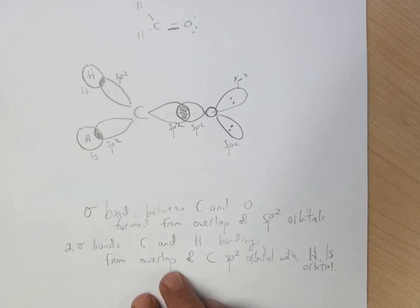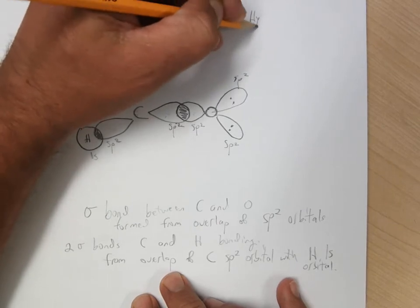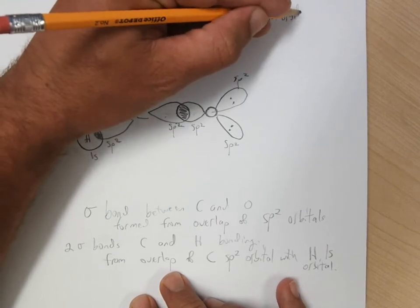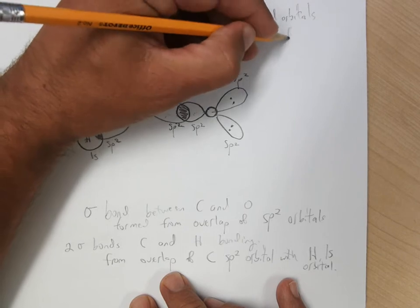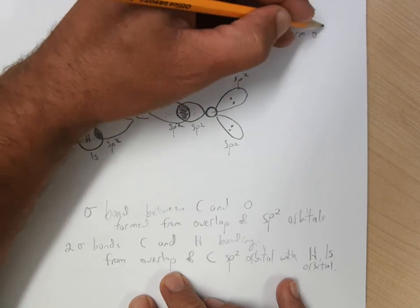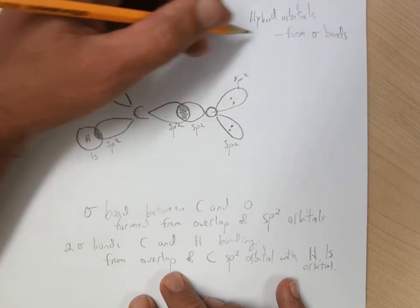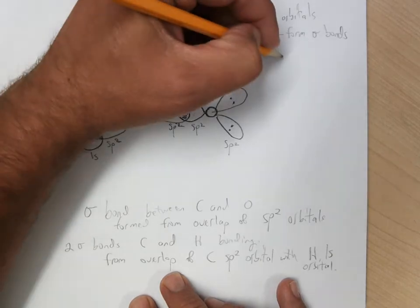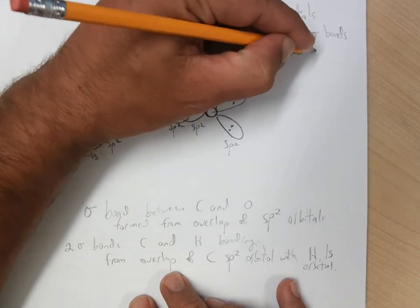So one of the things that I said was helpful for me to understand is that hybrid orbitals will either form sigma bonds or hold lone pairs